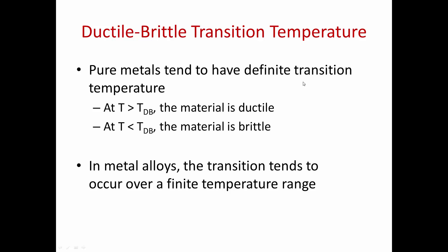When we alloy the metal and create a solid solution or other type of alloy, the transition temperature tends to not be as uniquely or discretely defined. The transition tends to occur over a finite temperature range, rather than a specific temperature.